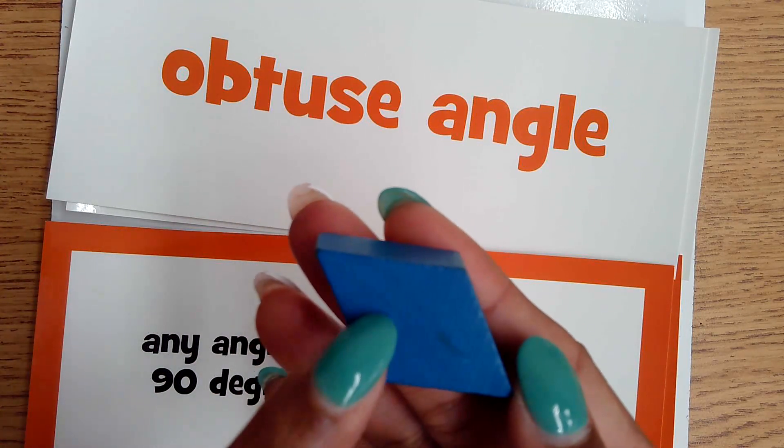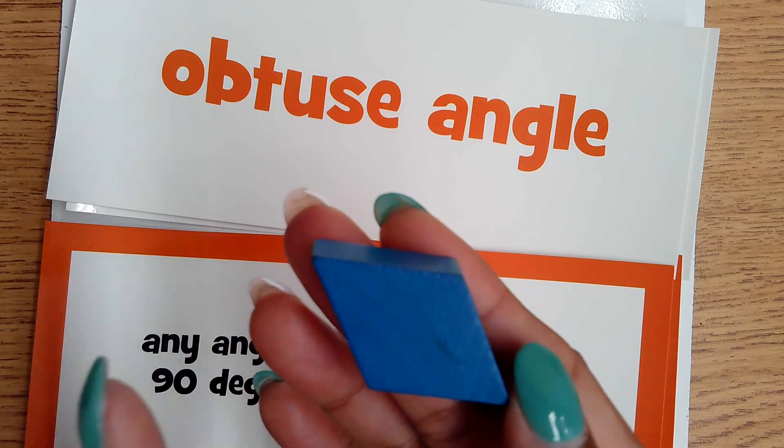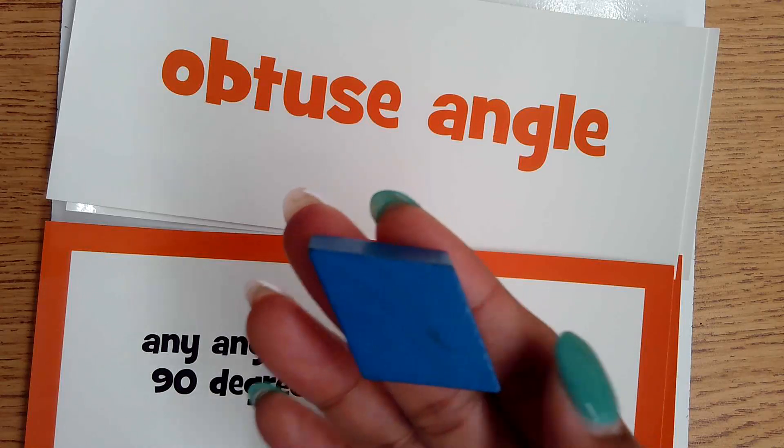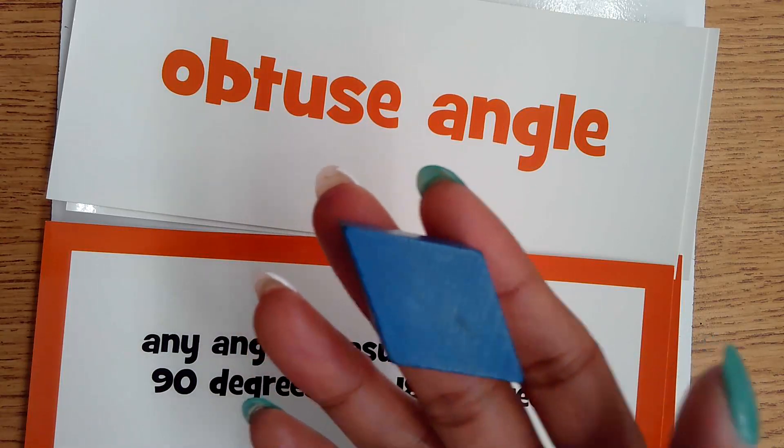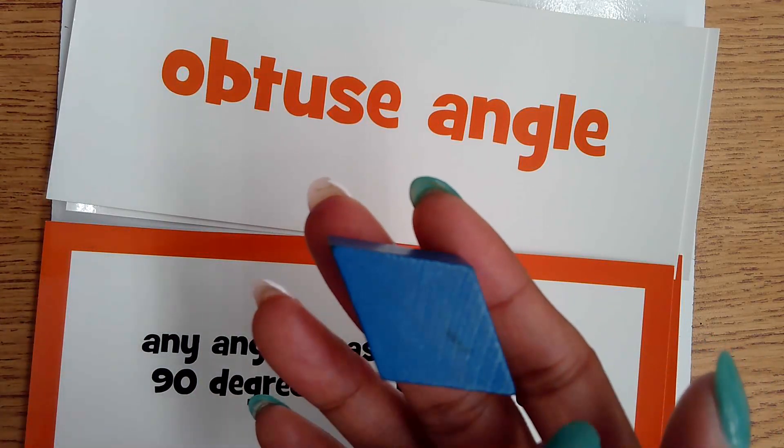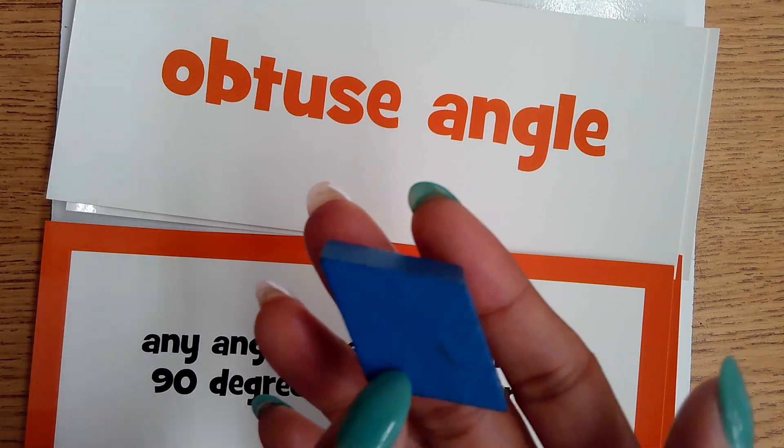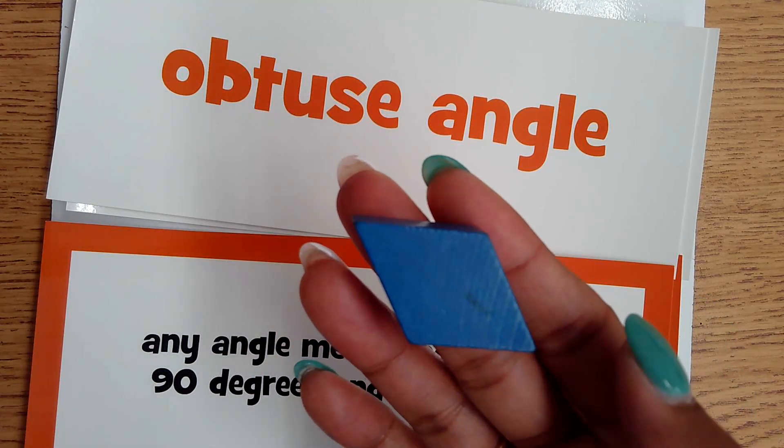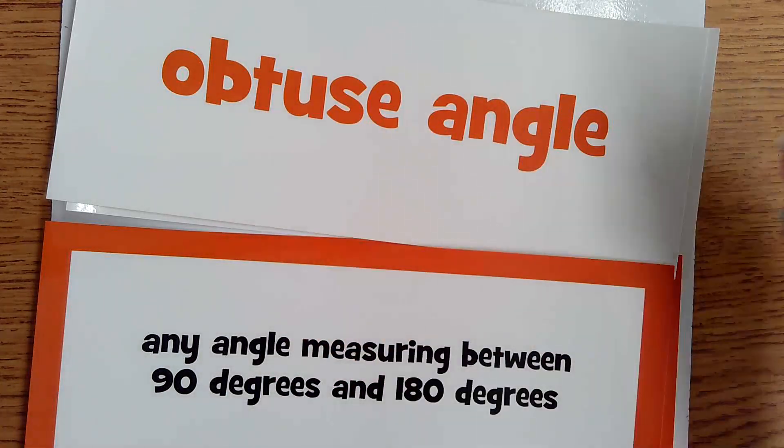It goes beyond that 90 degrees, but it's not exactly a straight line. This specific parallelogram has two acute angles and two obtuse angles, and that's what we would want the students to be able to identify when looking at these shapes.